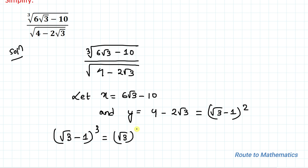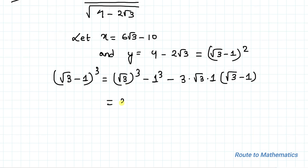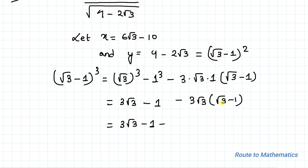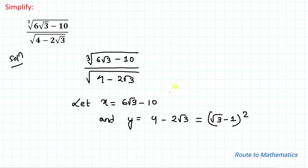Expanding (√3 - 1)³: (√3)³ - 1³ - 3 × √3 × 1 × (√3 - 1). We get 3√3 - 1 - 3√3 × (√3 - 1), which gives 3√3 - 1 - 9 + 3√3. Adding the terms: 6√3 - 10, which is exactly the value of x.